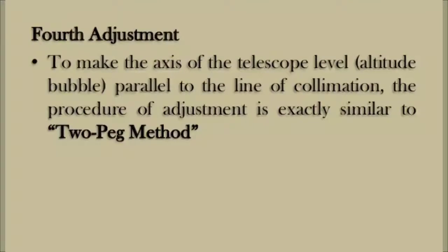The next method is to make the axis of the telescope level parallel to the line of collimation. This method uses the two-peg method. Just remember the two-peg method for this adjustment.